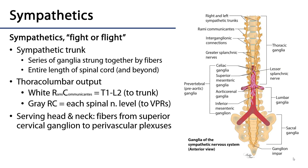To recap, the sympathetic division of the autonomic nervous system is the fight-or-flight response. Its largest constituent is the sympathetic trunks, which flank the spinal cord. These are a series of ganglia strung together by fibers that run the entire length of the cord and beyond — ascending to the base of the skull as the superior cervical ganglion and descending all the way down to the coccyx as the ganglion impar.